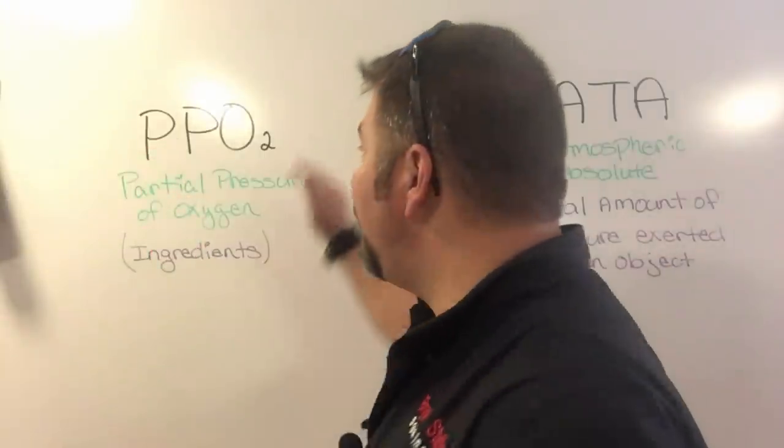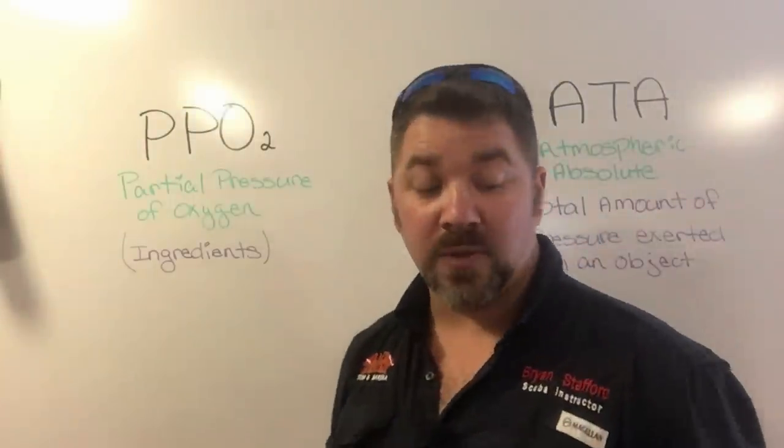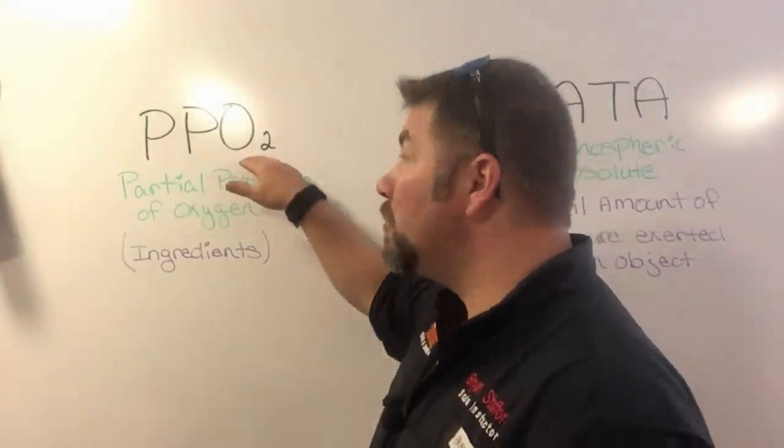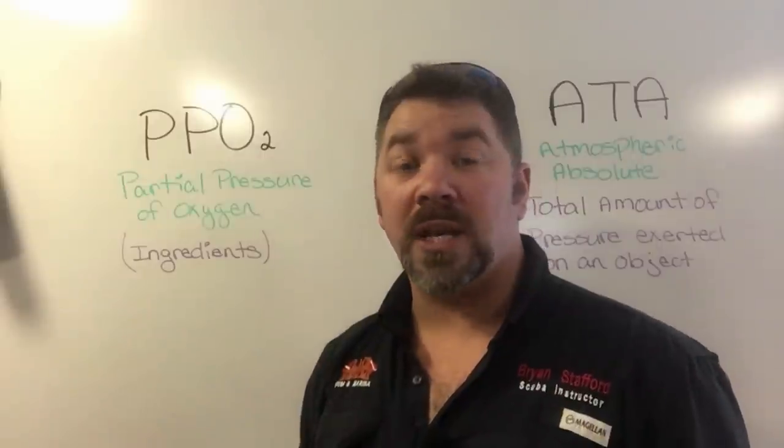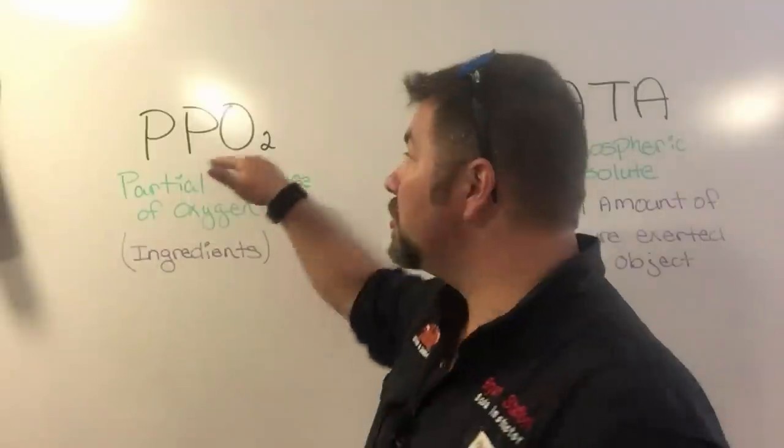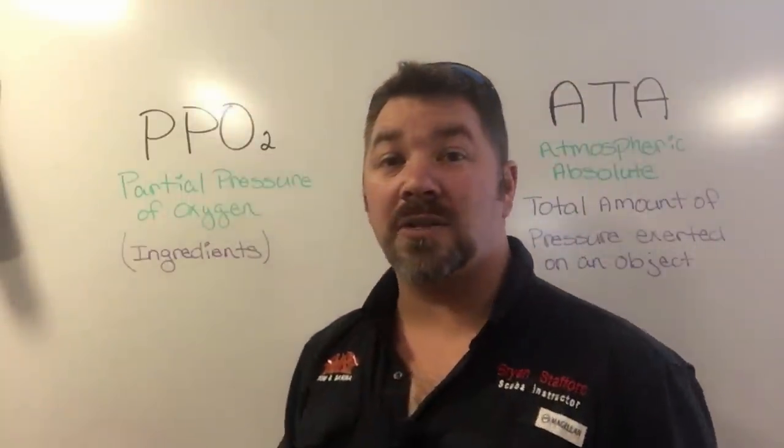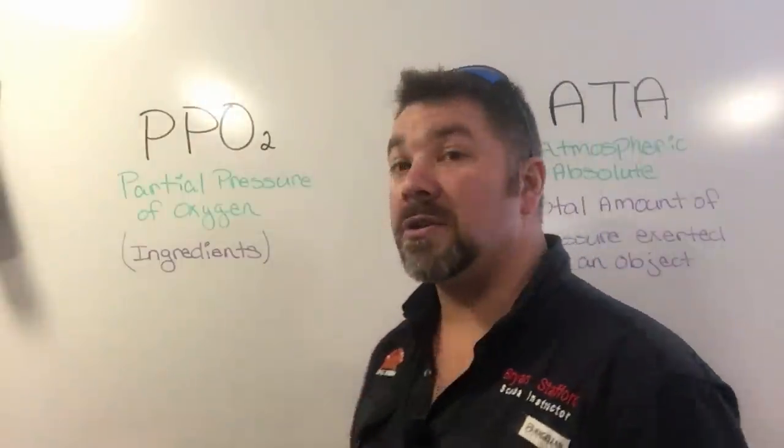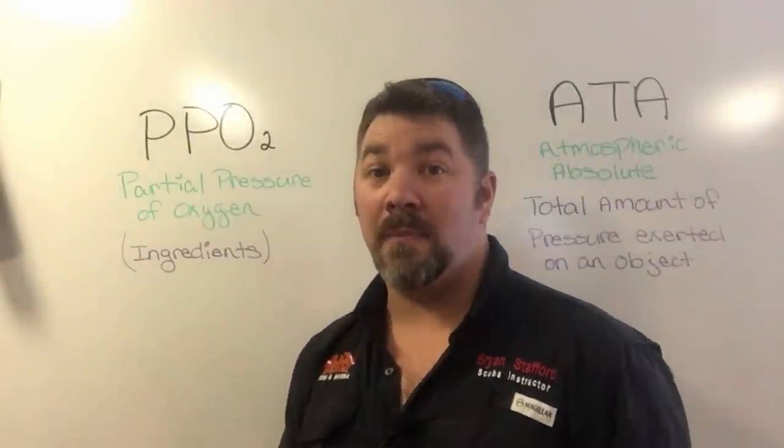If we took standard breathing gas, which is 21% oxygen and 79% nitrogen, then the partial pressure would simply be 21%. If we look at nitrox 32, then the partial pressure of oxygen in that nitrox 32 is simply 32%. Think of partial pressure as just an ingredient that makes up a whole.